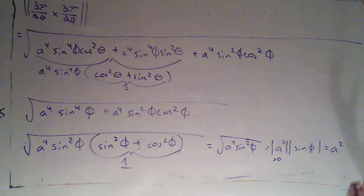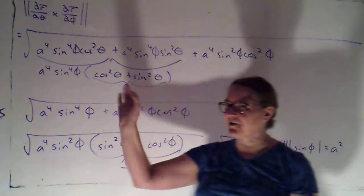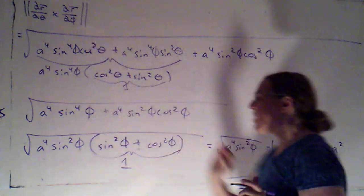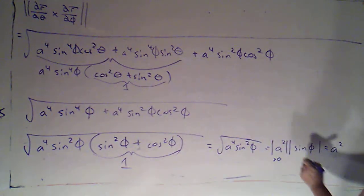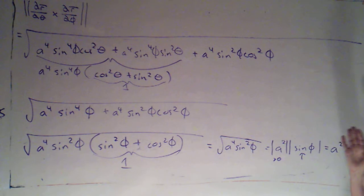Now as a general rule, sine of something can be positive or negative, but if you remember when we wrote down our parametrization, part of that parametrization involved listing the restricted domain that we were working with, and we said we were going to have phi only taking on values between zero and pi.